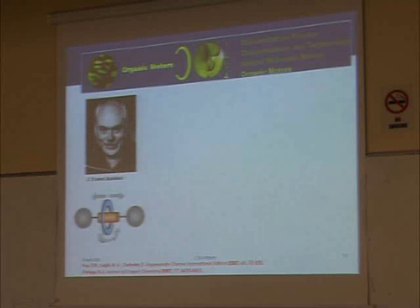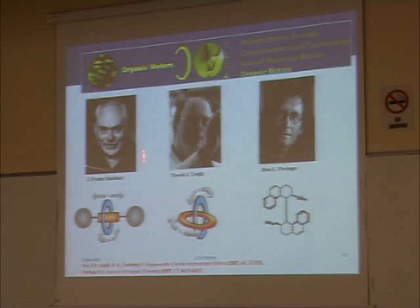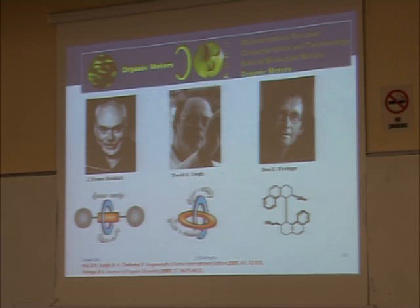Now, organic motors. The pioneers of this field are Stoddart, Leigh, and Feringa. Stoddart is known for his rotaxane system, which is a simple thread with a ring around it that moves in both directions or could rotate around the ring in a pirouette. Leigh introduced catenane systems that are pirouette only. I will not go into detail of these systems because my colleague will cover them. I will also introduce Feringa's motors, which are very different — much smaller molecules, whereas the others are macrocycles.